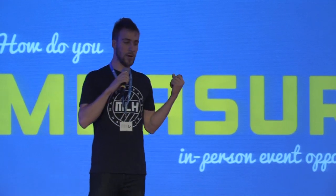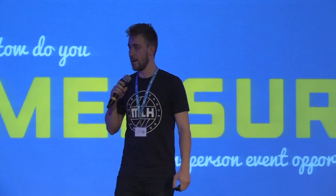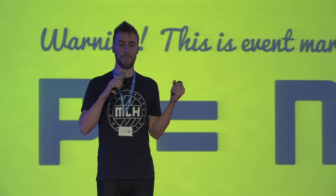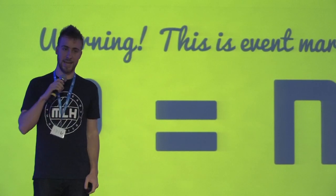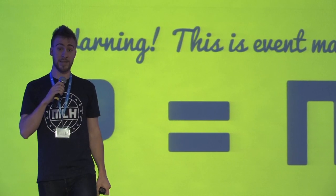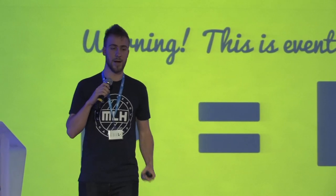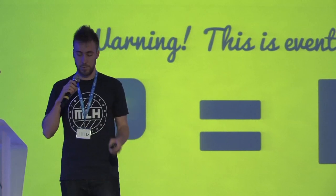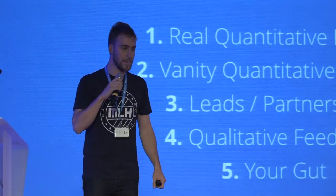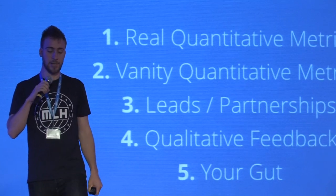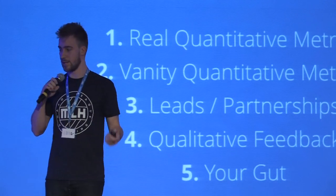Now let's switch gears. We've evaluated all of our potential event opportunities — all the places to sponsor, to speak, to attend. How do we measure the actual value of what we got out of it? Fair warning: this is the P equals NP of event marketing — it's a really hard problem, and there's no easy answer. I'll give you a lot of things that are positive signals and some that are negative. Even if you evaluate all of these things, you're still never going to know the true value. The five things I use: real quantitative metrics, vanity quantitative metrics, leads and partnerships, qualitative feedback, and your gut.